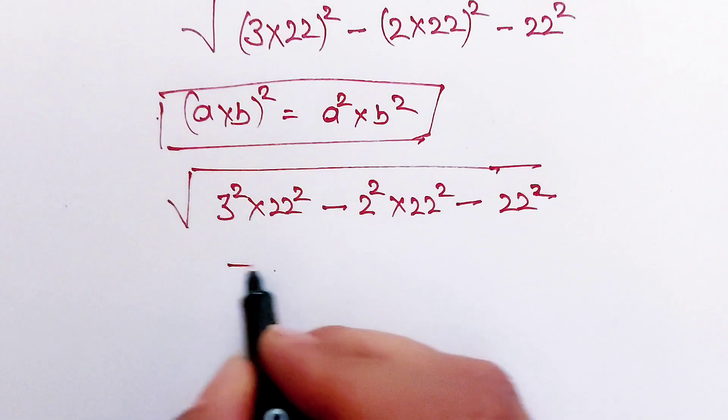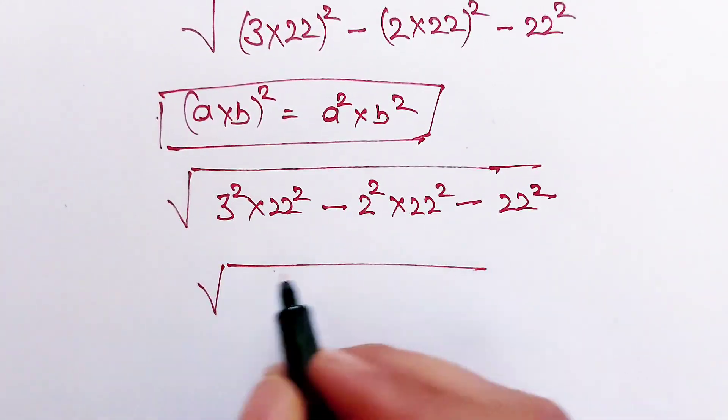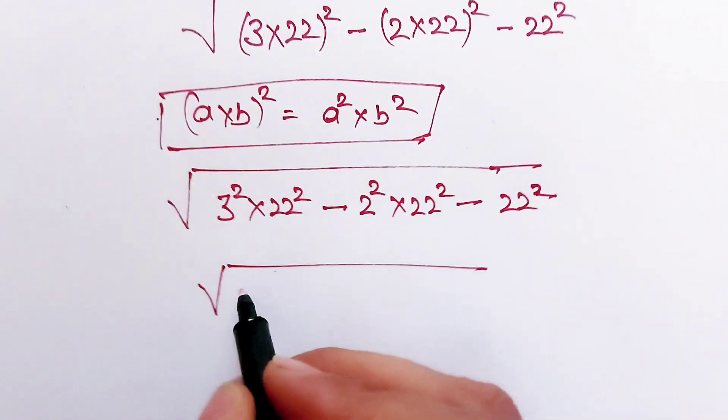Now we will take out 22 squared as a common term from these terms.